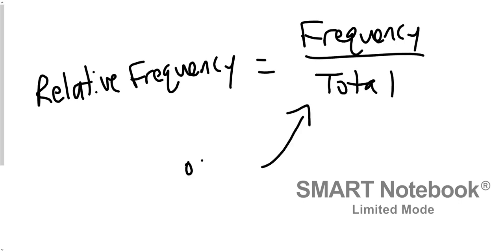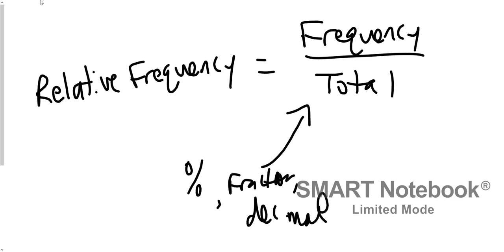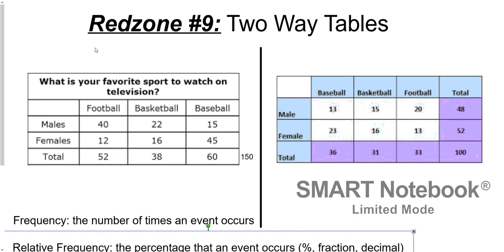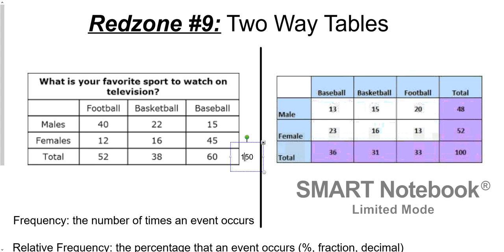Relative frequency equals frequency over total, and you can take this and turn it into a percent, a fraction, or a decimal. Back to the two-way table from the first slide. The reason we use relative frequency is: I can look at the left table and say 40 males like to watch football, and the right table says 20 males like to watch football. But why are those numbers so different? They have different totals — this one is 150, this one is 100.